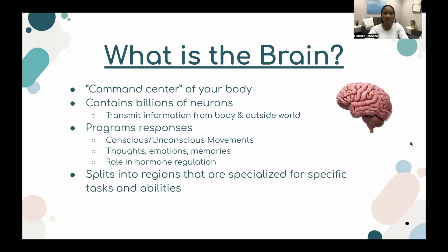First off, we need to know what exactly is the brain. It is the command center of our body, specifically our nervous system. It contains billions of neurons which transmit info from the body and the outside world. It programs responses such as unconscious and conscious movements, thoughts, emotions, and memories, and plays a role in hormonal regulation.